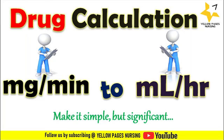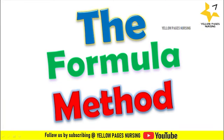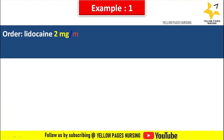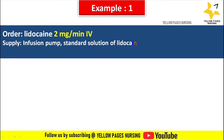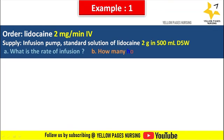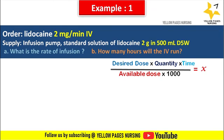Using the formula method, let's discuss the first example. Doctor's order reads: lidocaine 2 milligram per minute IV, supply infusion pump, standard solution of lidocaine 2 gram in 500 mL D5 water. What is the rate of infusion and how many hours will the IV run? The formula is: desired dose × quantity × time ÷ available dose = X.